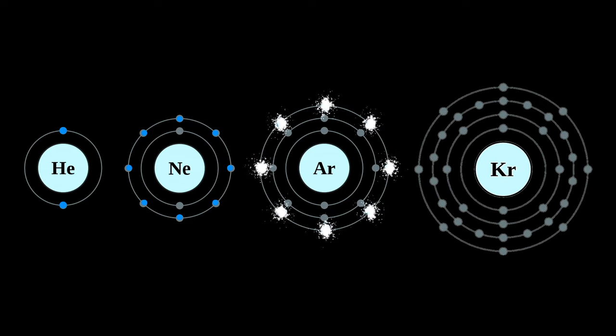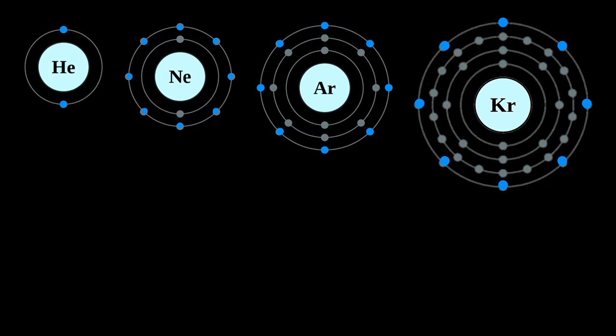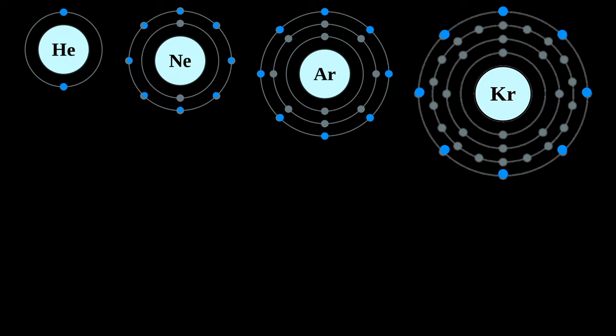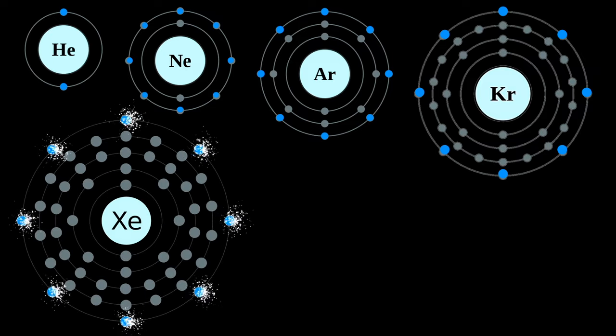Next is argon, and then krypton, with its eight electrons in the outer shell. Finally, we have today's element, xenon, with its eight outer electrons.